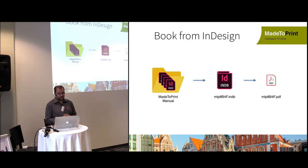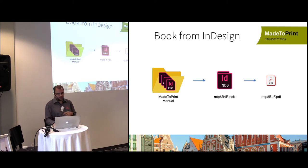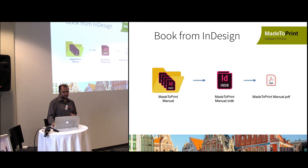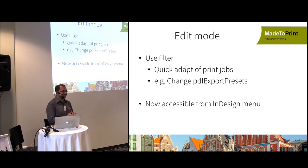A further enhancement: when you put a folder with multiple InDesign files into Made to Print, it automatically creates a book file and processes all InDesign files into one PDF. Previously a cryptic name was used for the book file, making it hard to get a clean PDF name. Now the folder name is used for the book name, and with the book doc name token you can get a good PDF name at the end.